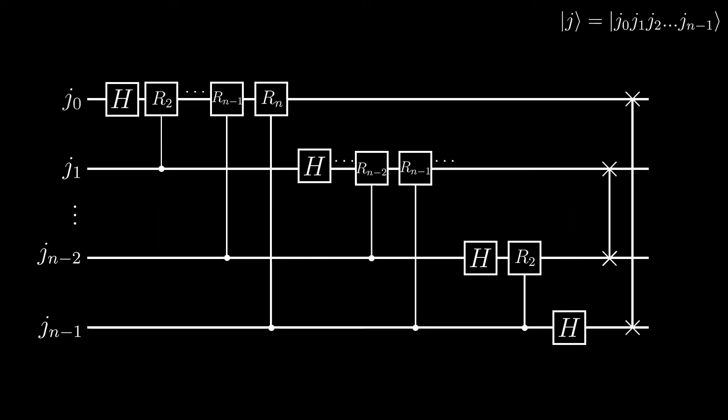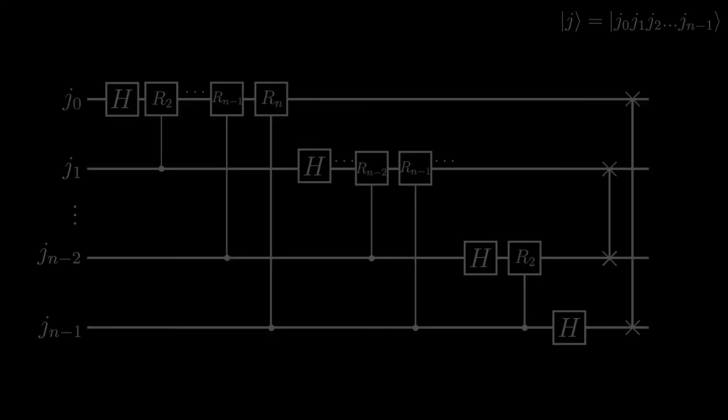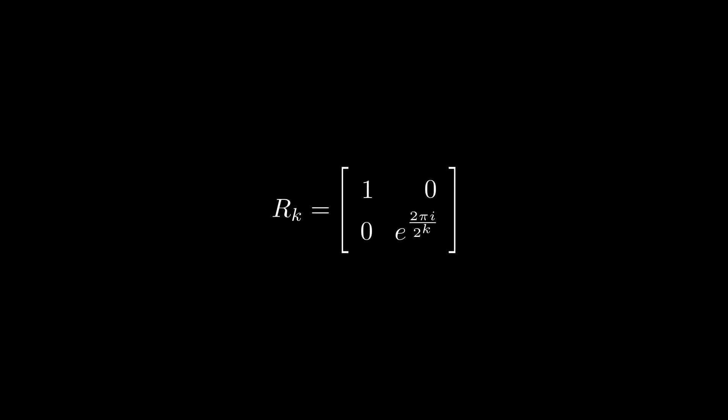Here is the quantum Fourier transform circuit for any number of bits. As you can see, there are two gates that we have not seen before. This gate here is the controlled R gate. We will define this gate with this matrix. As you can see, this gate has a variable k, which we can set and affects the phase applied.